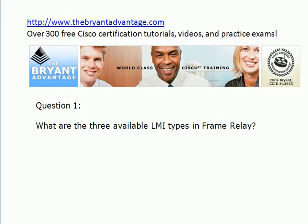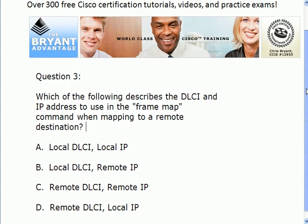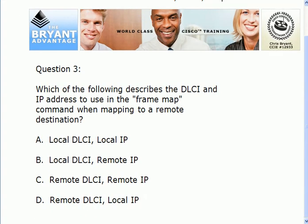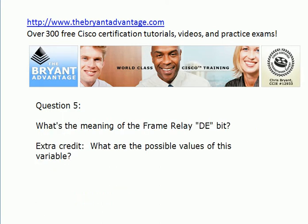Question one: What are the three available LMI types in frame relay? Question two: Give me two commands that can verify what LMI type a router is running. Question three: Which of these describes the DLCI and IP address that you should use in the frame relay map command when mapping to a remote destination — do you want the local or remote DLCI, and the local or remote IP? Question four: Which of these frame relay map command values are optional? Question five: What's the meaning of the frame relay DE bit — not just what it stands for, but what it does, why it would be set or not set, and what are the possible values of that variable?